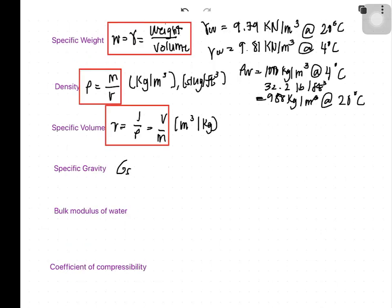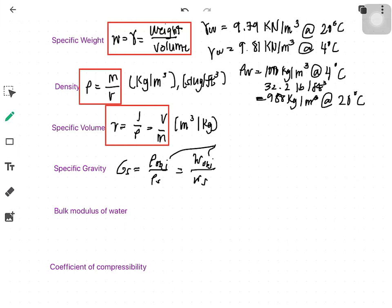Specific gravity, G_s, is equal to the ratio of the density of your material over the density of your reference material, or the specific weight of your material over the specific weight of your reference material. The reference material depends on your substance — if it is a fluid, the reference material will be water. The specific weight of water is 9.81 kilonewton per cubic meter, and the density of water is 1,000 kilograms per cubic meter.